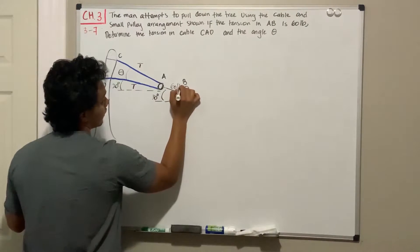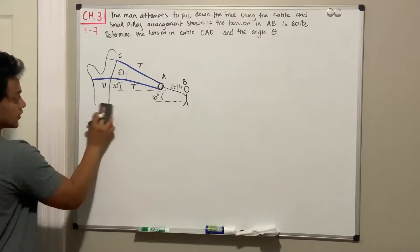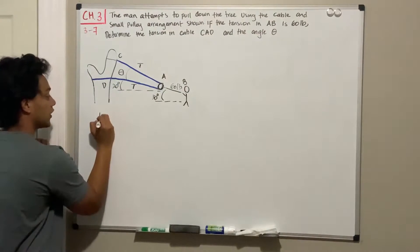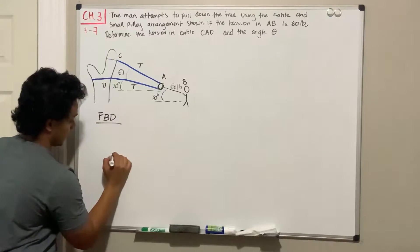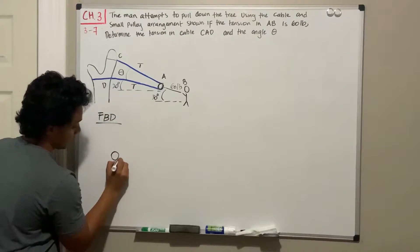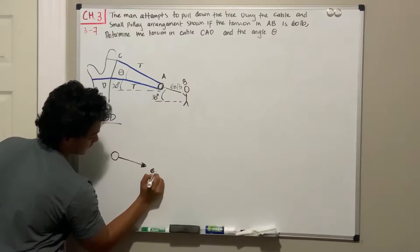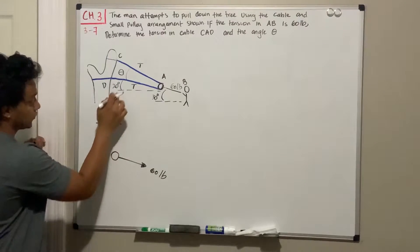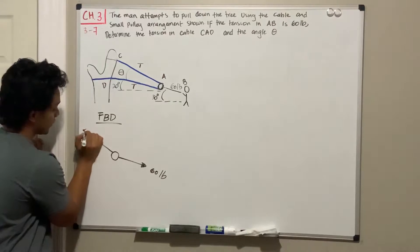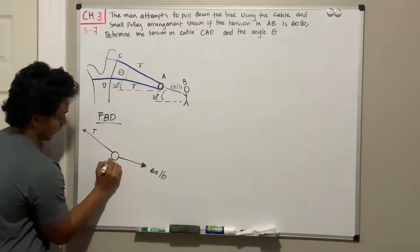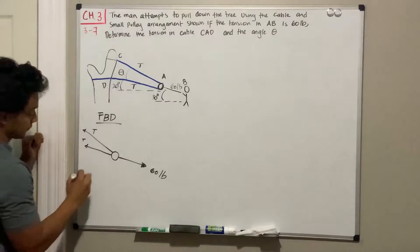So we have 60 pounds. Let's draw our free body diagram — I'm going to cut a little bit of the tree so we have more space. We draw the free body diagram at point A. We have 60 pounds going in one direction, and we have two tensions coming from the pulley. Since it's a pulley, both tensions are the same magnitude, so we have T on both sides.